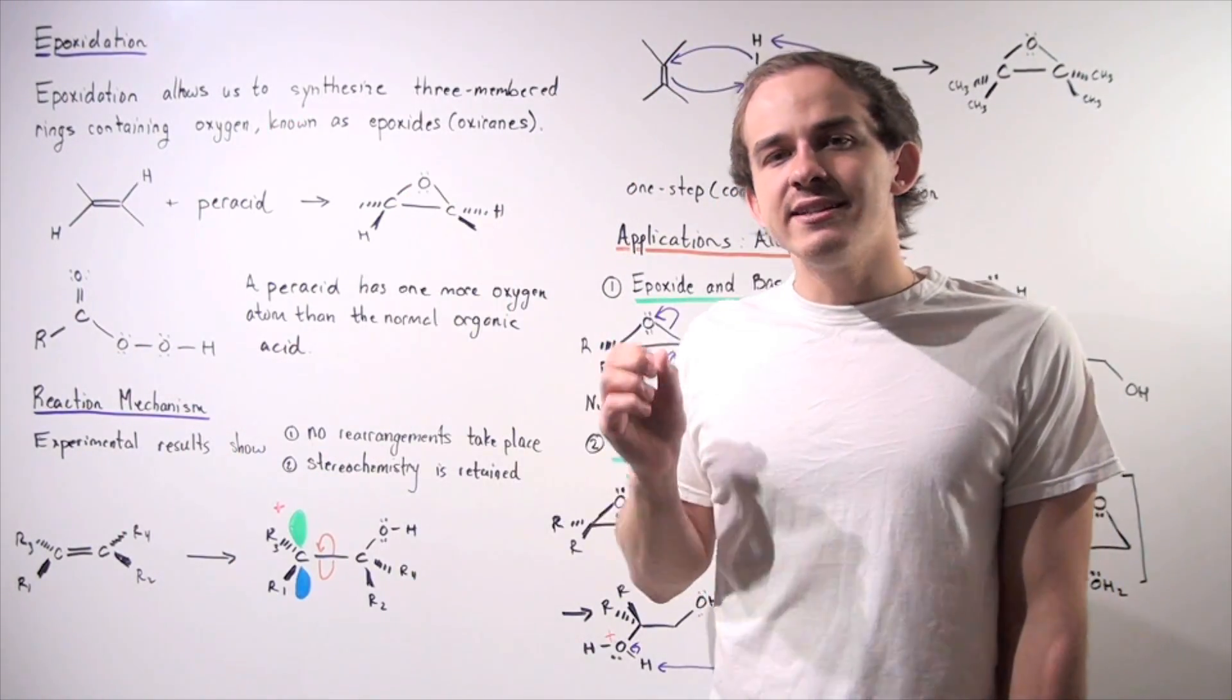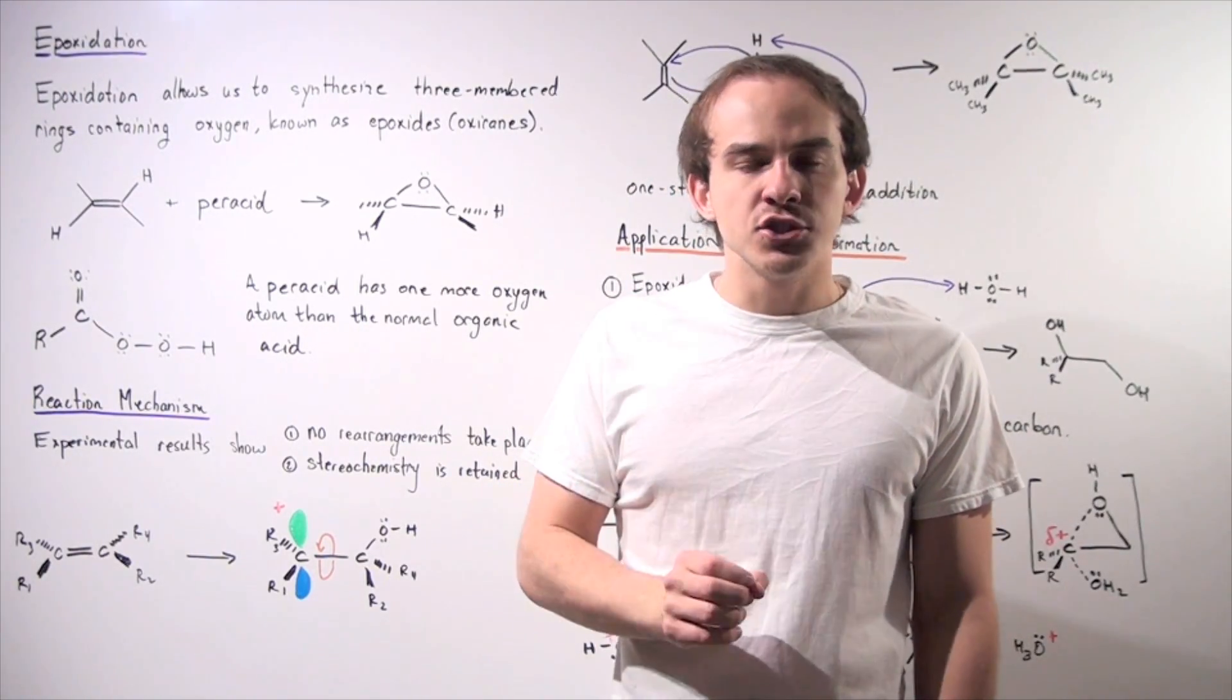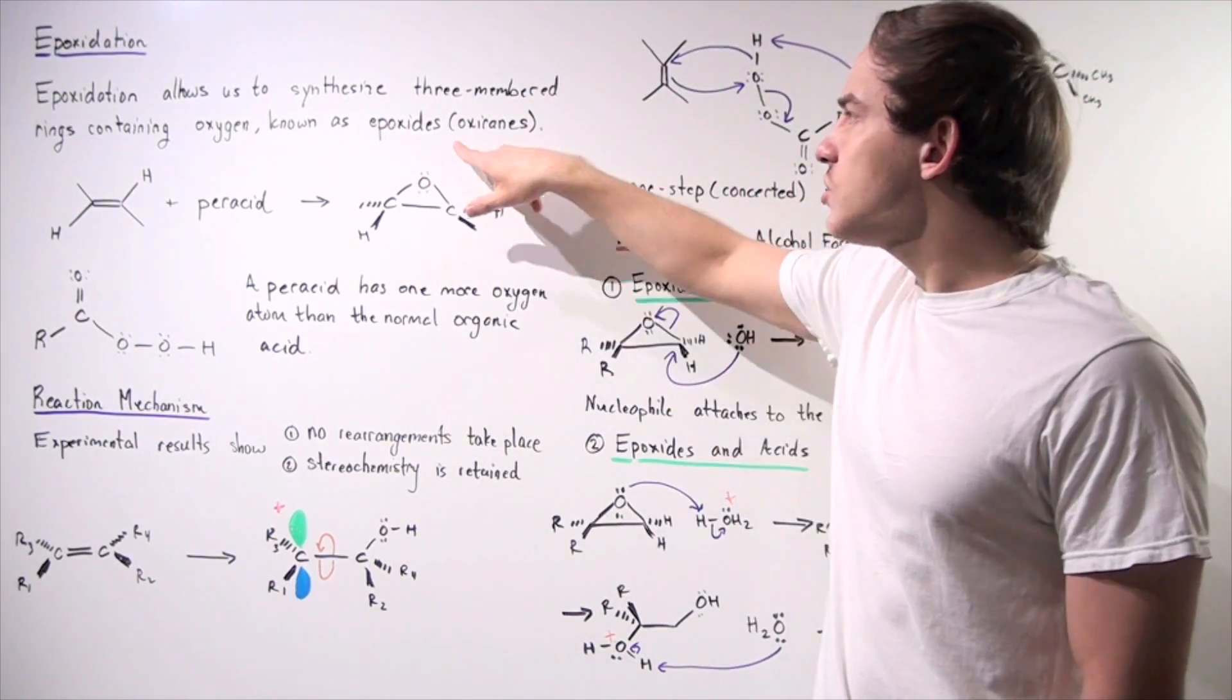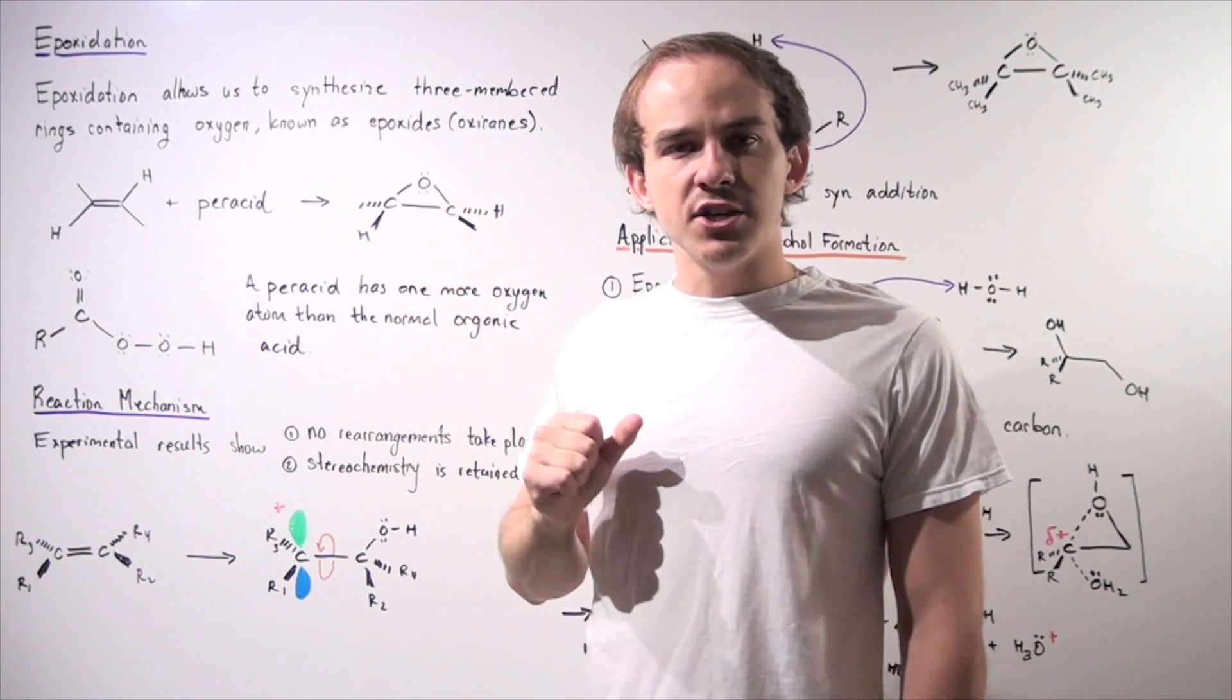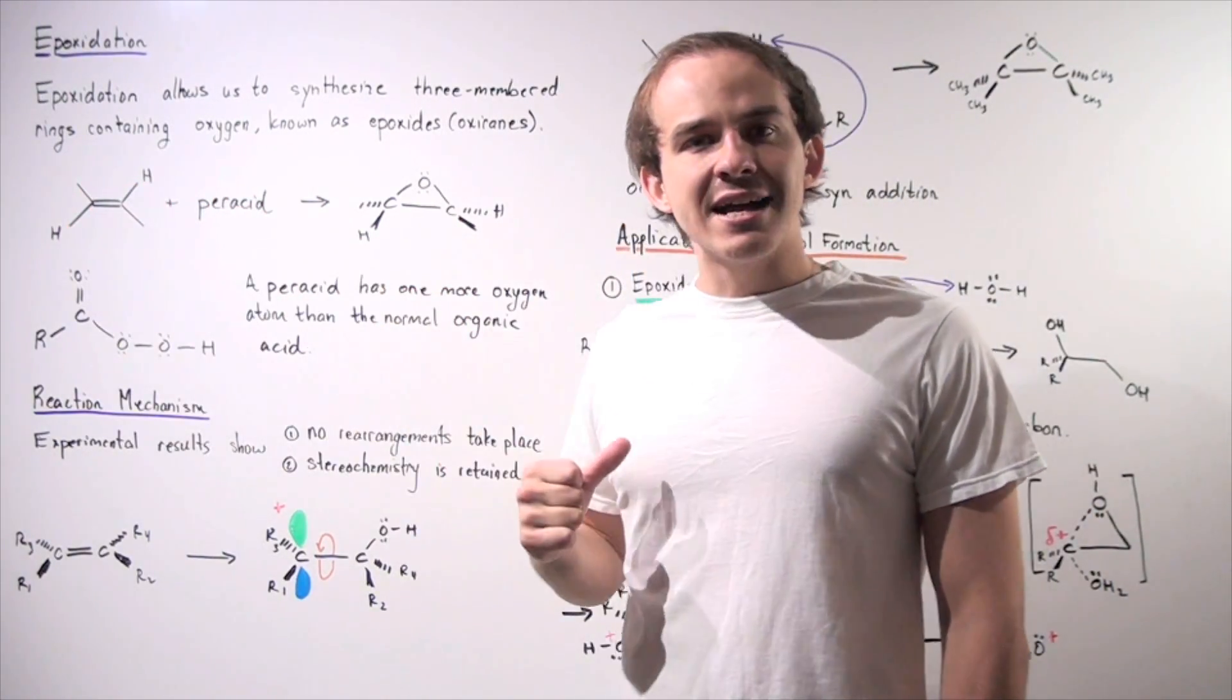Epoxidation allows us to create three-membered rings containing oxygen atoms, and these are known as epoxides, also known as oxiranes. In our epoxidation reaction, our reactants are alkenes and peracids.